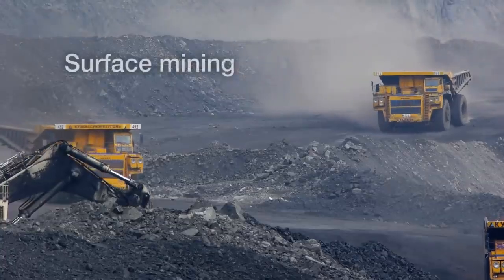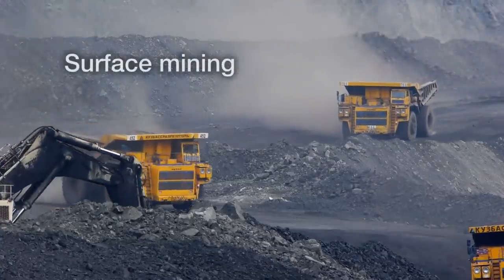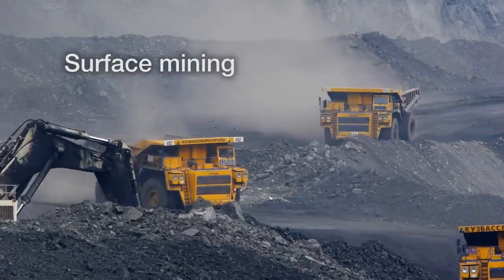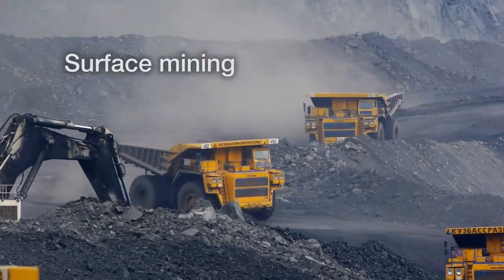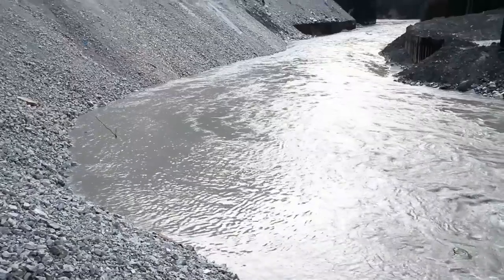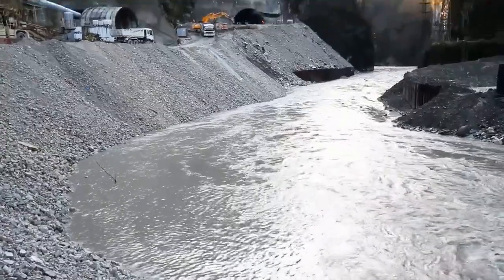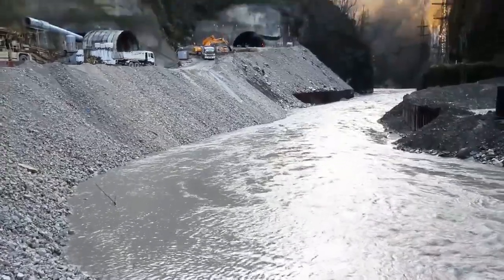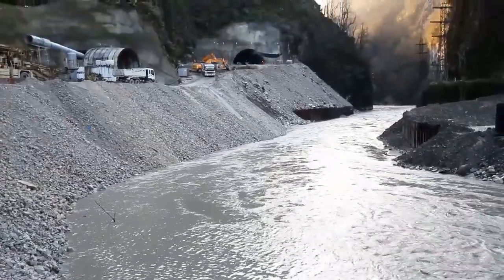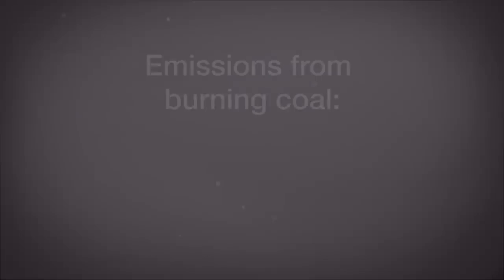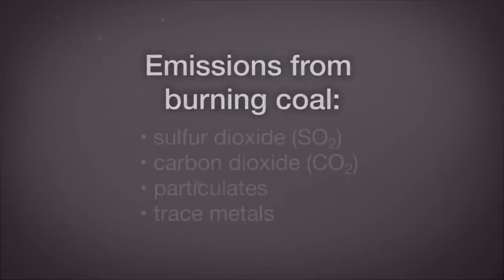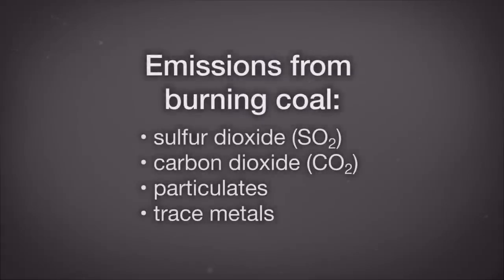Due to the sulfur in coal there's acid mine drainage. When water runs over the mine tailings in strip mining, you sometimes end up with contamination of waterways. Coal is also problematic because when you burn it, that sulfur combines with oxygen and you get large emissions of sulfur dioxide, leading to acid deposition.